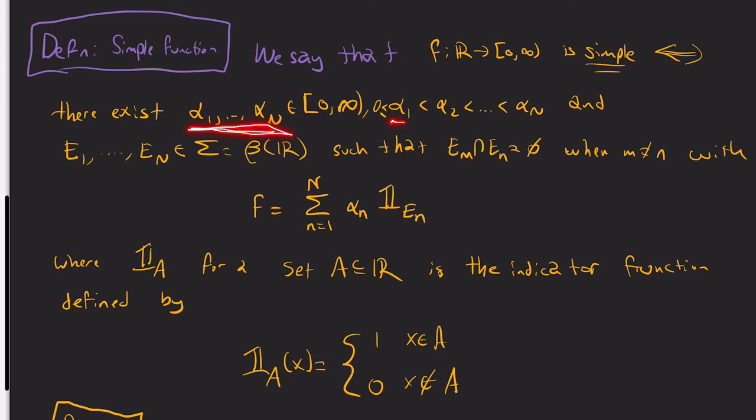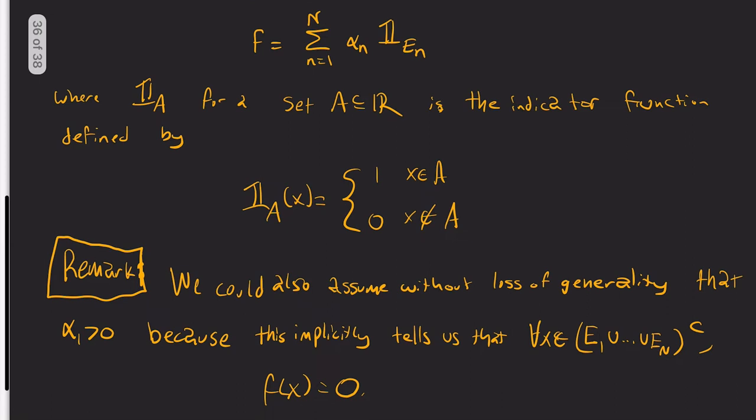There exists a finite set of ordered numbers and a finite number of measurable sets in the Borel sigma algebra that are disjoint, such that f is a linear combination of indicator functions on that set. This tells you the range is finite because I have finitely many sets and can only take on values α_n. Why? Because the indicator function is 1 when you're in the set and 0 otherwise. For any set A, that is what the indicator function looks like.